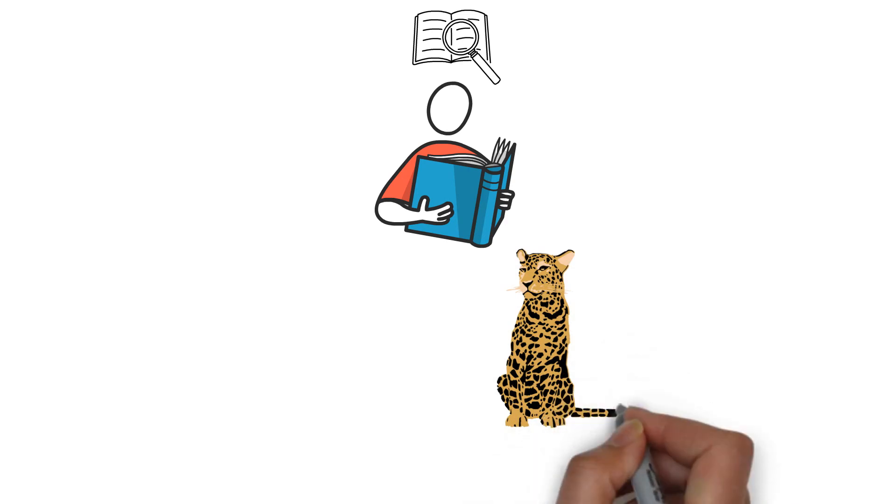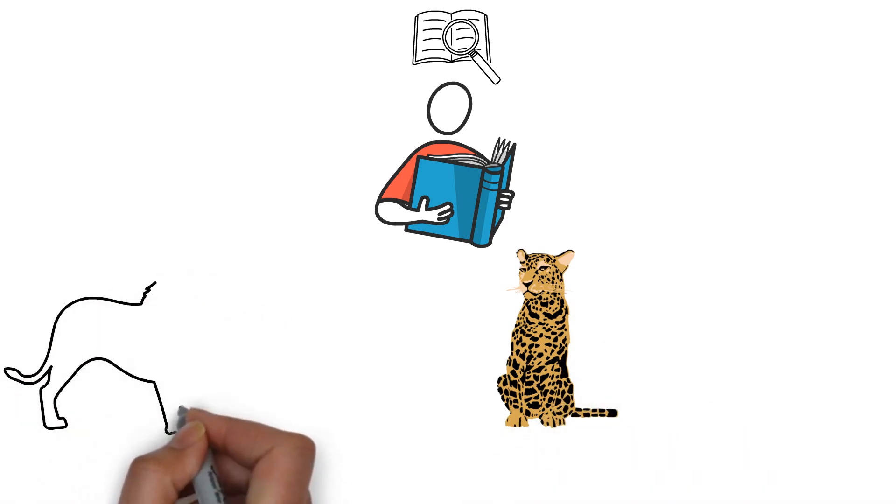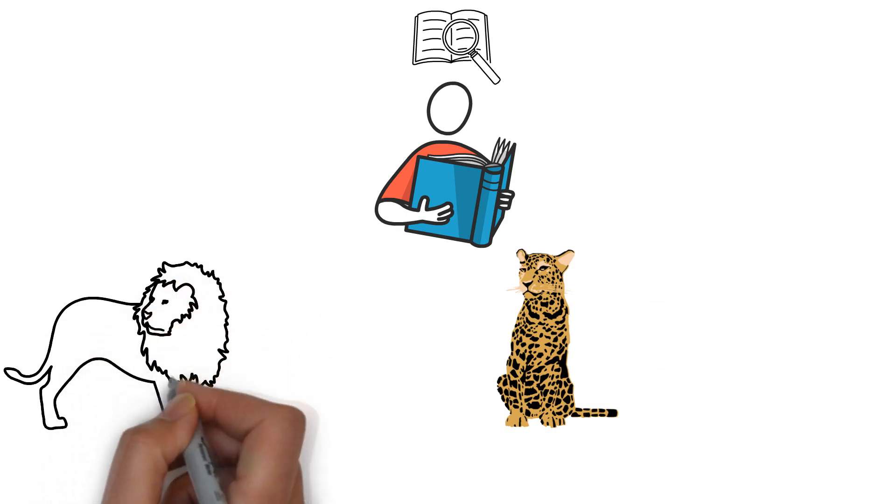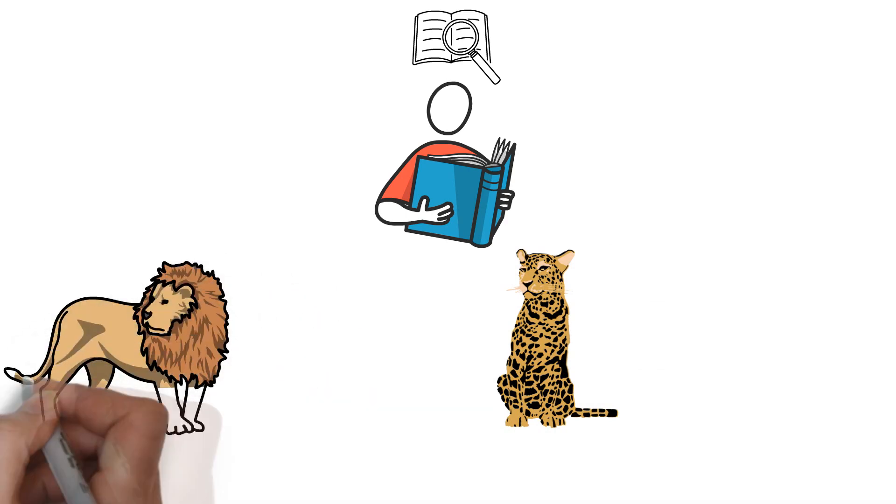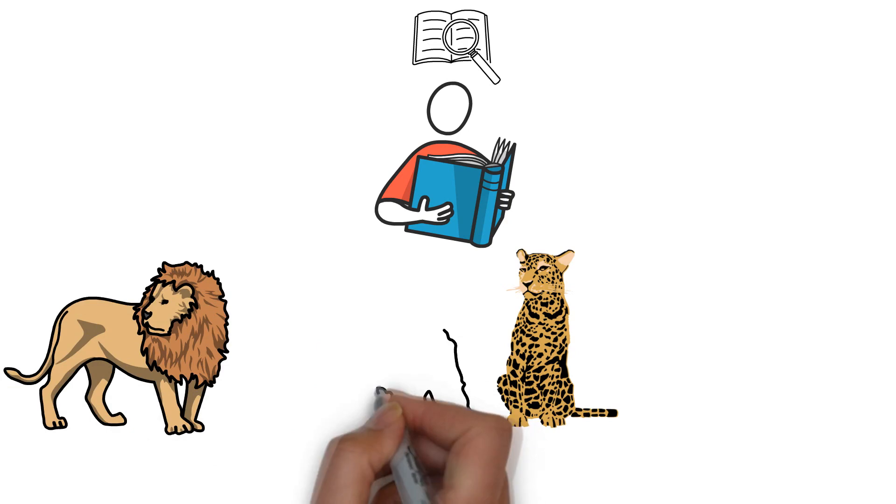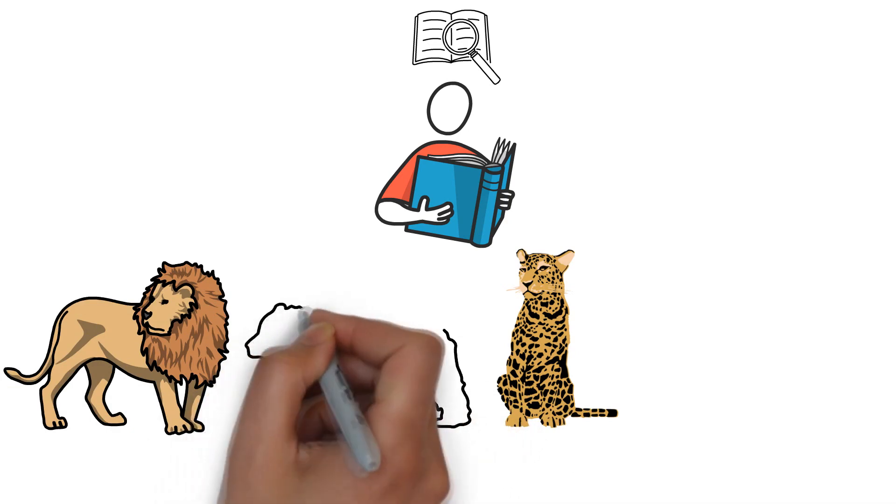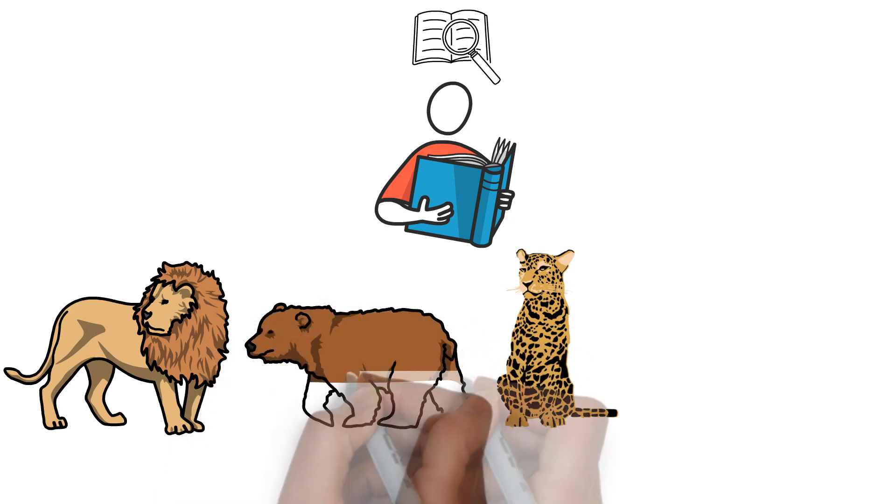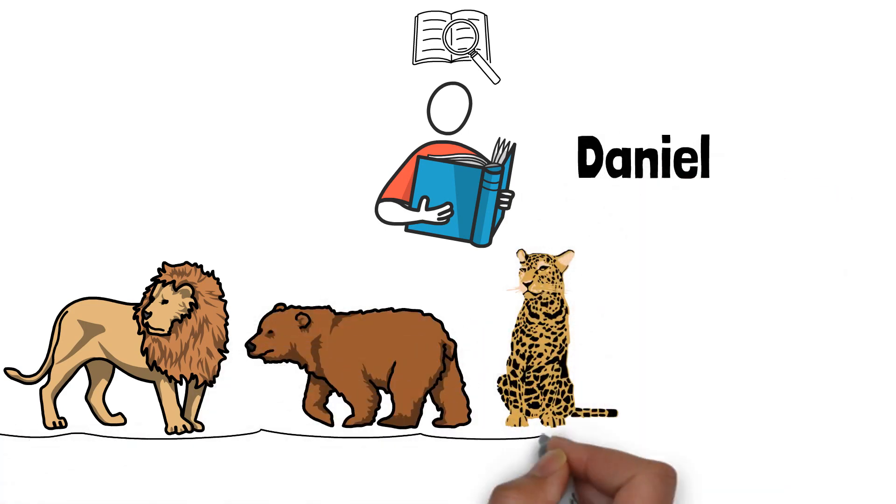So to begin, the Book of Revelation describes the Beast as a hybrid-like creature that resembles a leopard, bear, and a lion. And each of these animals are actually located in the Book of Daniel, where Daniel also sees, like the Beast of Revelation, various beasts: a lion, a bear, and a leopard, arising out of the sea.